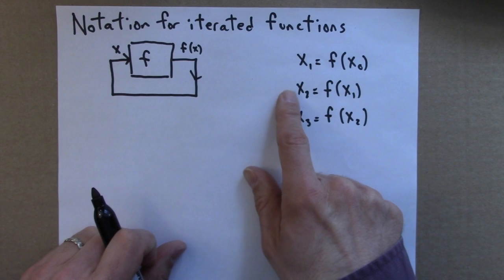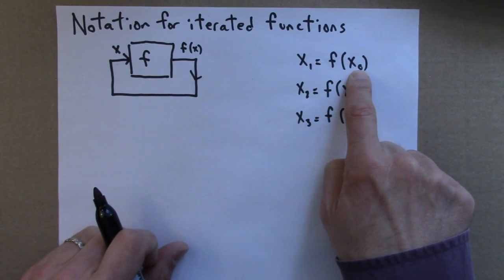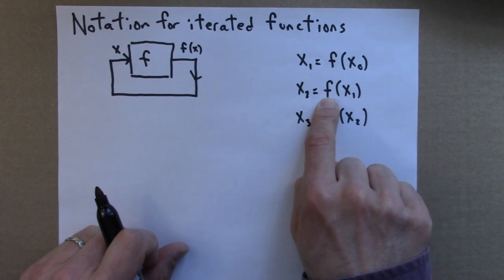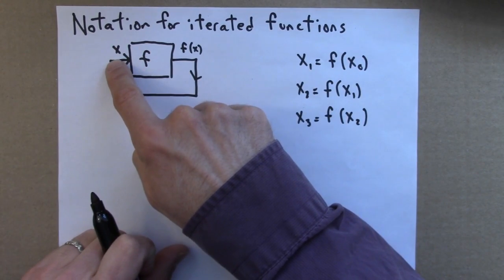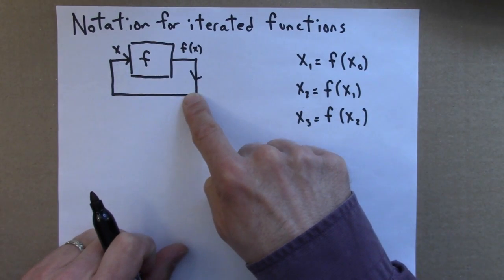Here's another way to think about this. To get x2, I start with the seed and I do f to it twice. So I start with x0, do the function to it once, I get x1. Twice, I get x2.